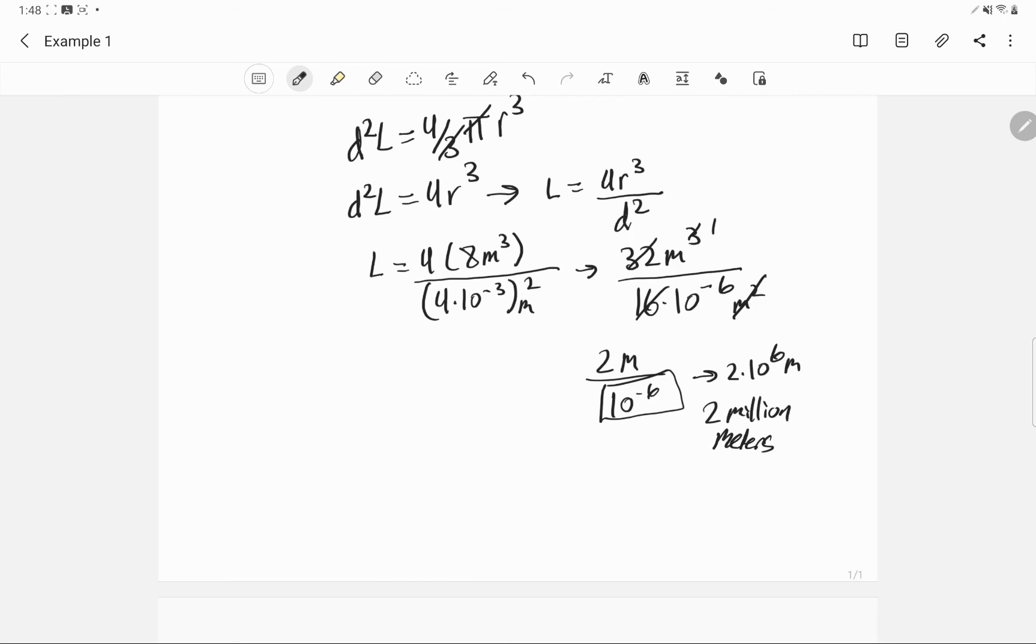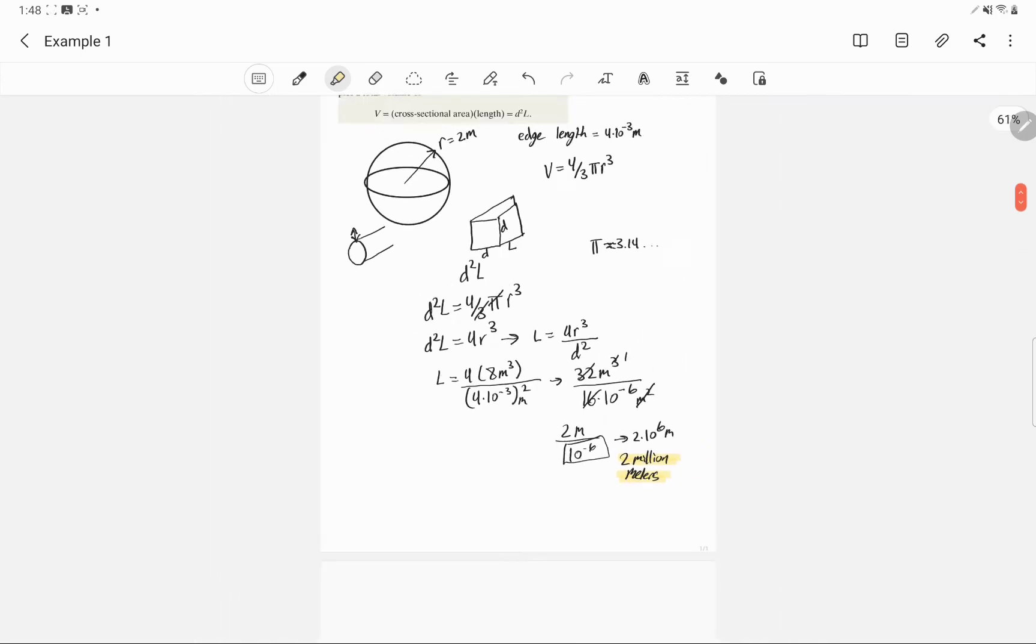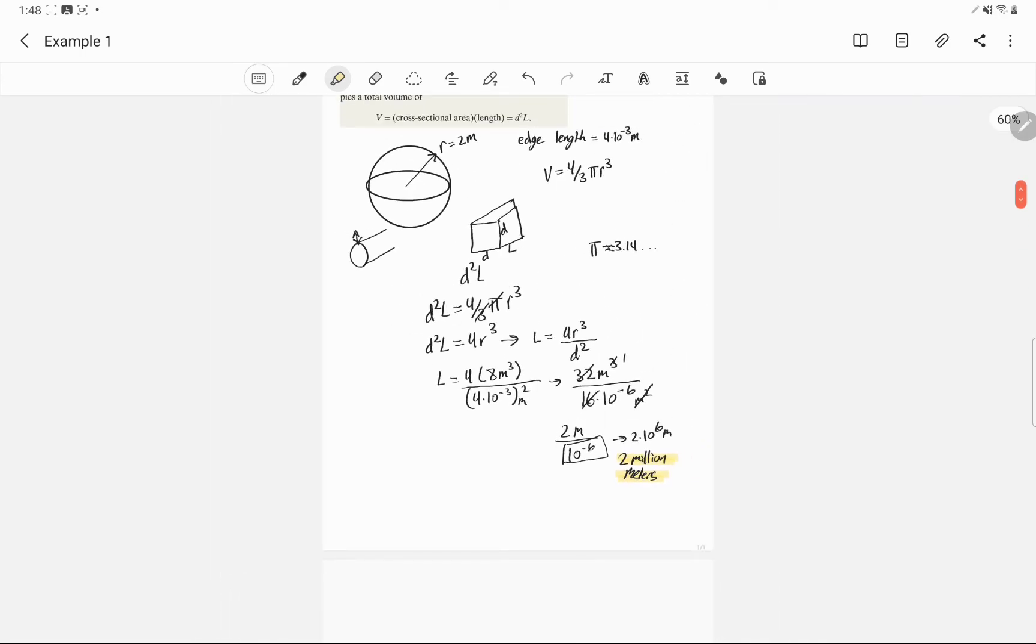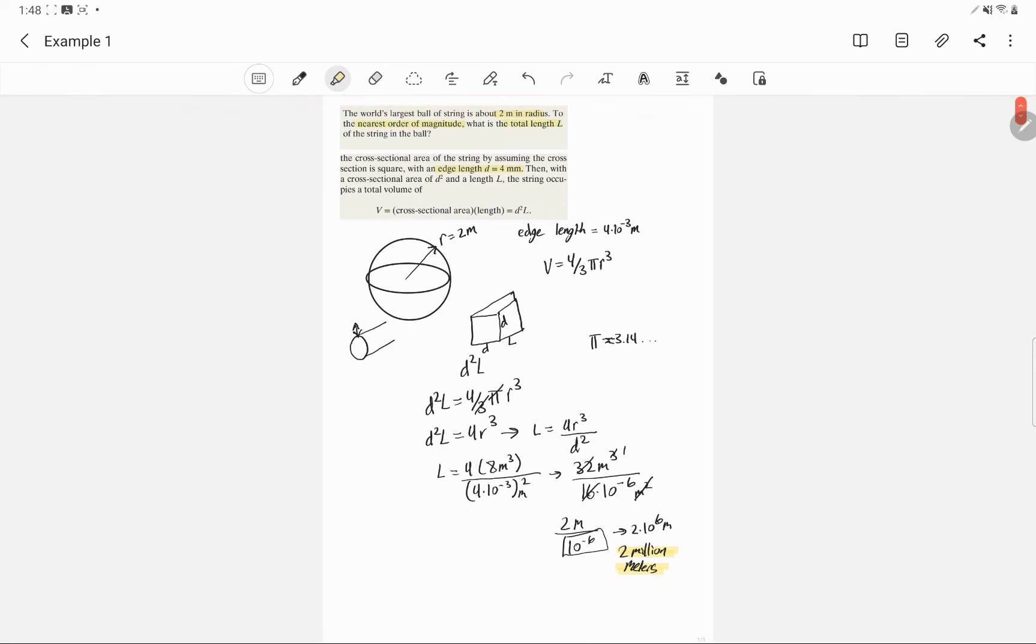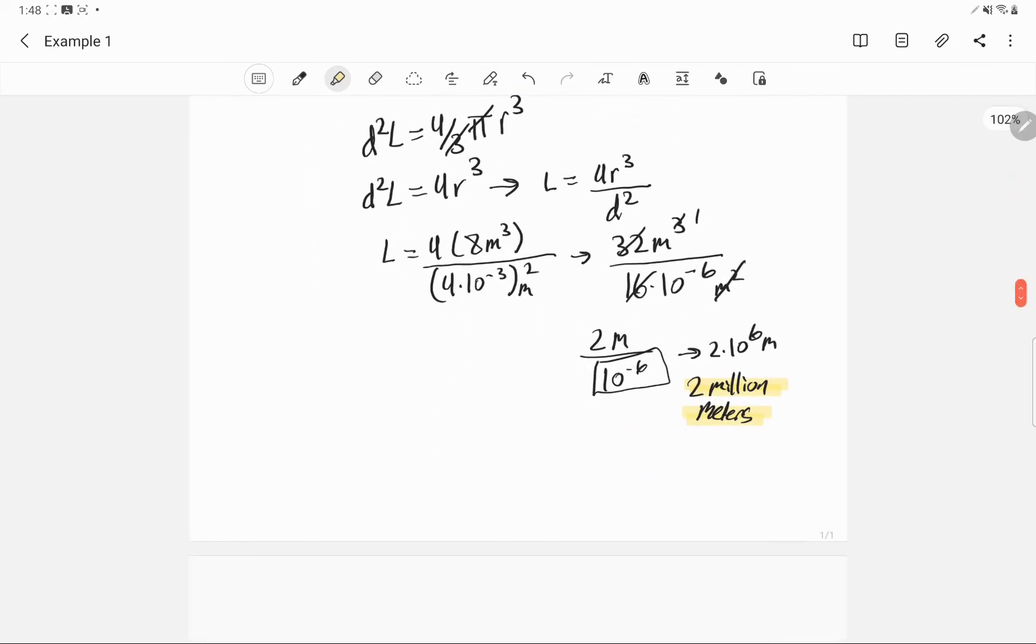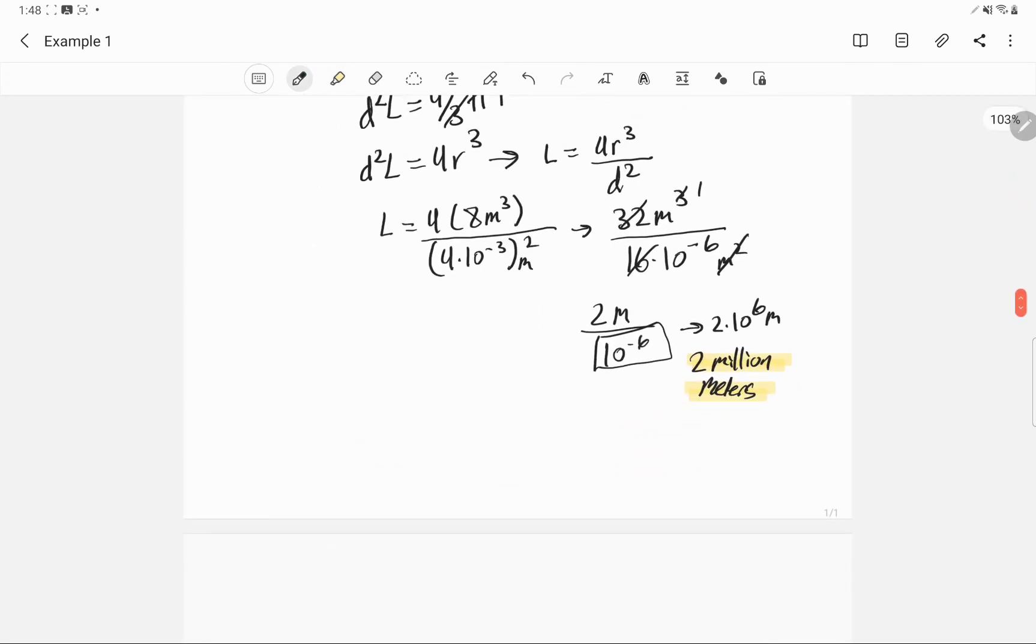So to explain what's kind of confusing about this problem is you're asked to make an assumption and approximate with an order of magnitude. And the edge length, you have to read a little bit later in the problem and take that information and apply it and overestimate the string.